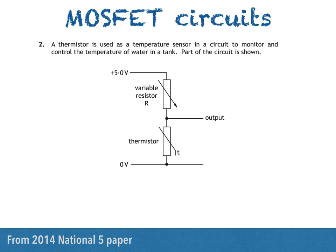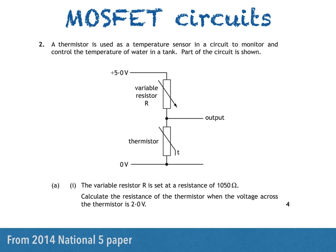A thermistor is used as a temperature sensor in a circuit to monitor and control the temperature of water in a tank. Part of the circuit is shown. Part E part 1 says the variable resistor R is set at a resistance of 1050 ohms and asks us to calculate the resistance of the thermistor when the voltage across the thermistor is 2 volts.